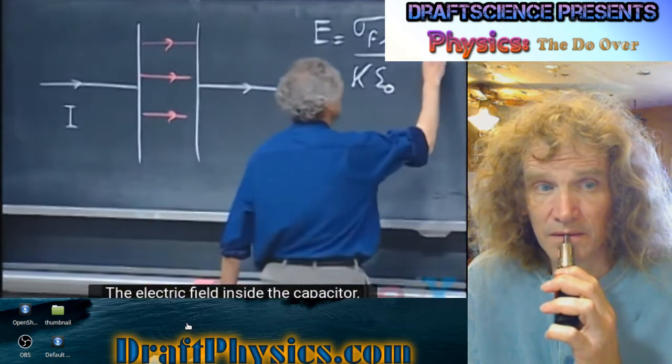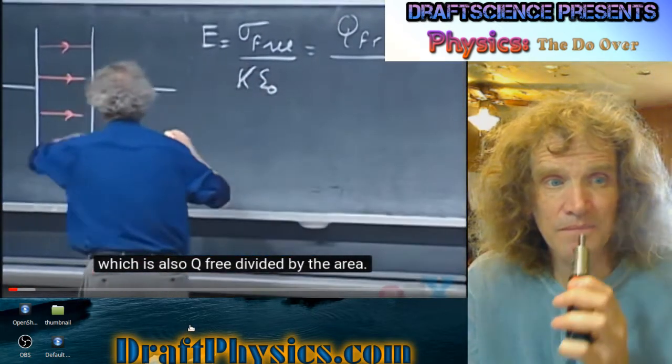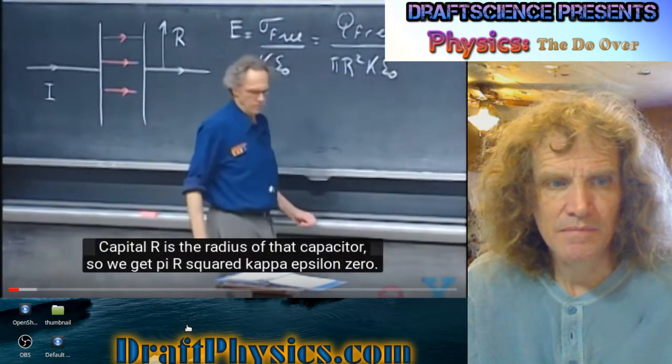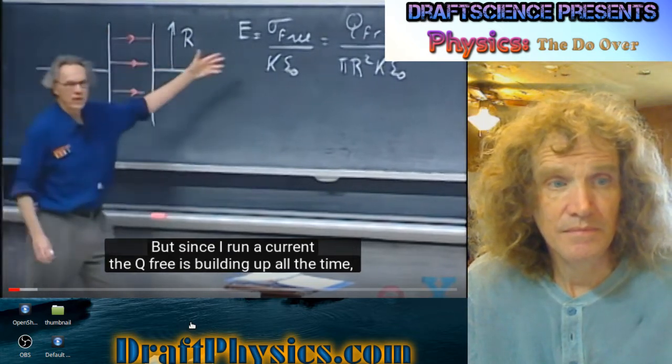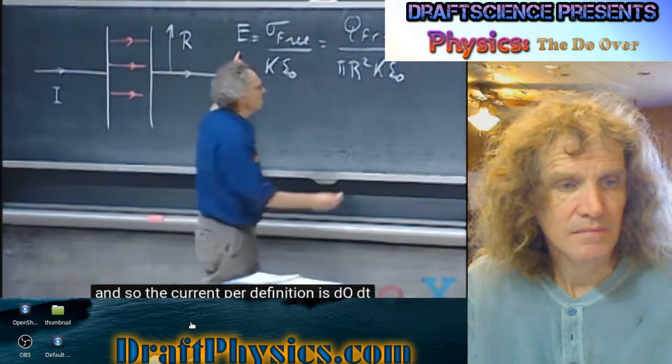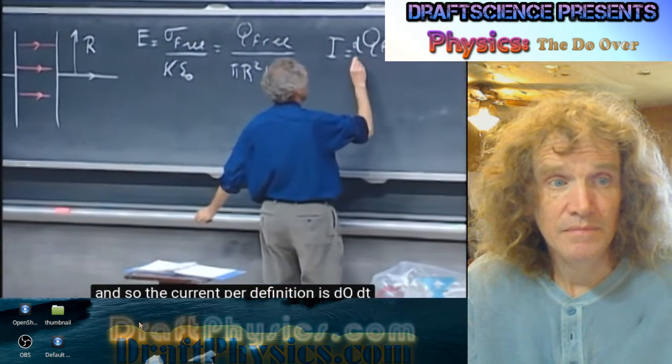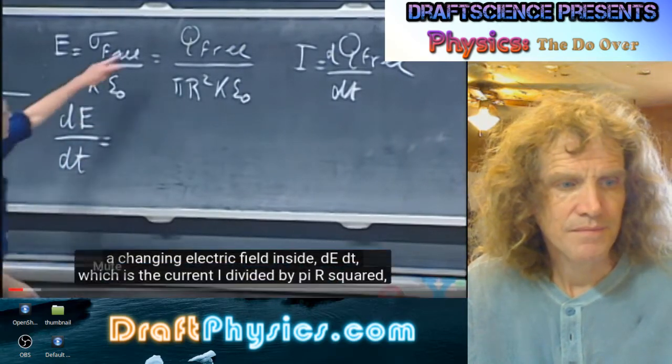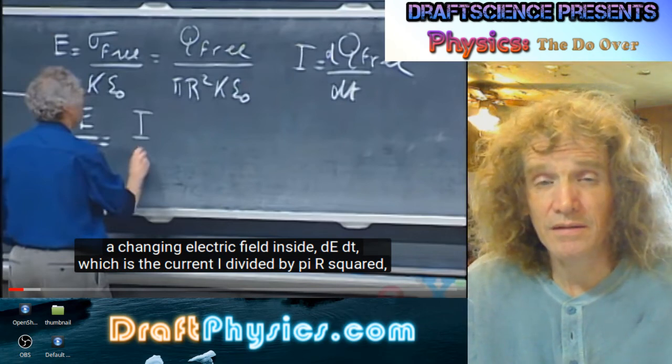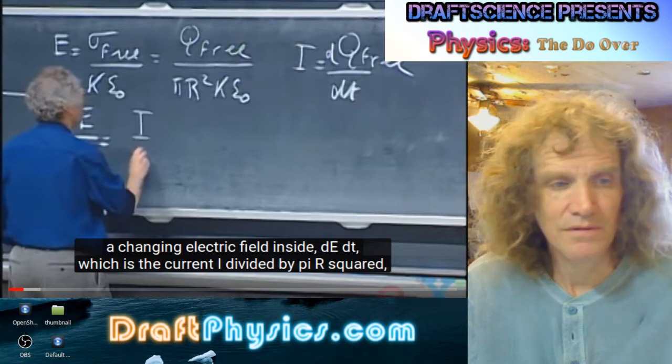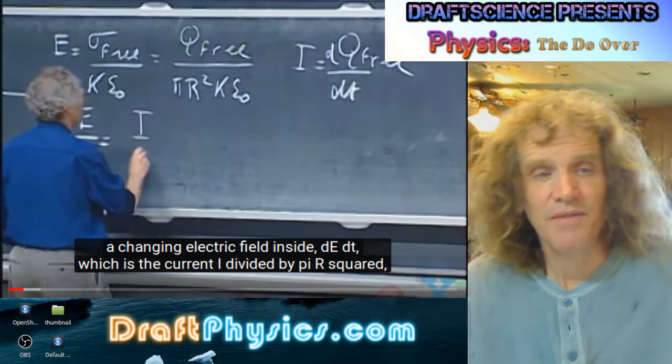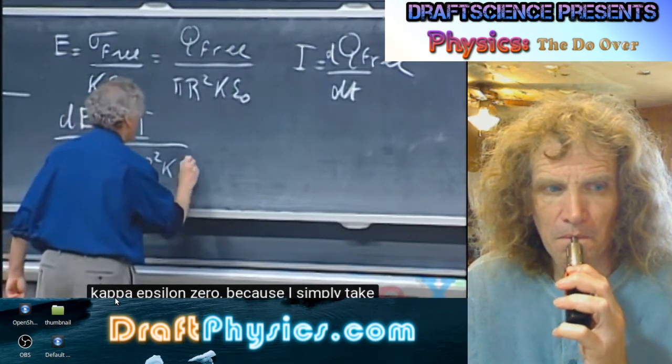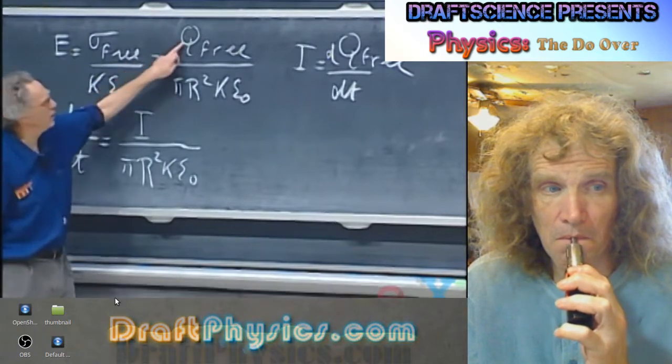Inside the capacitor, sigma free divided by kappa epsilon zero, which is also q free divided by the area. This is a circular plate capacitor, capital R is the radius of that capacitor, so we get pi R squared kappa epsilon zero. But since I run a current, the q free is building up all the time, and so the current, per definition, is dq dt, and so I now have a changing electric field inside.